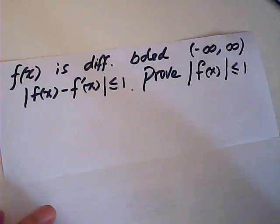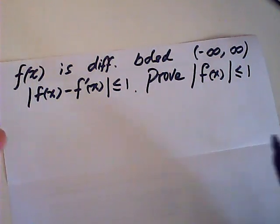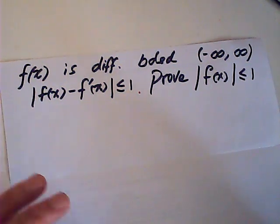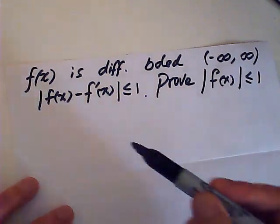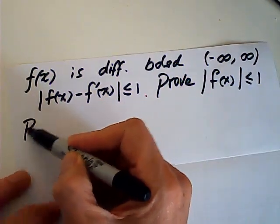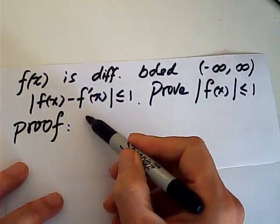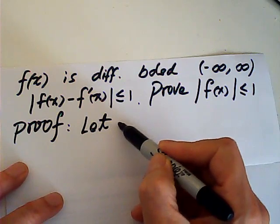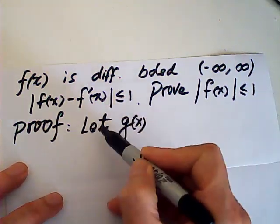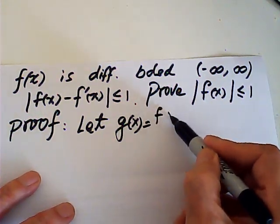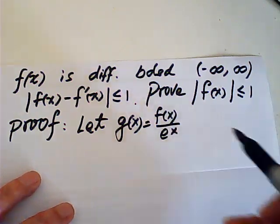Now okay, it's not that easy because we don't know how to start, but this is the first step to take. After several trials, I find this is a very nice proof. I let g of x equal f of x over e to the x.